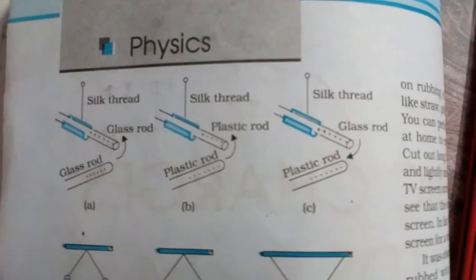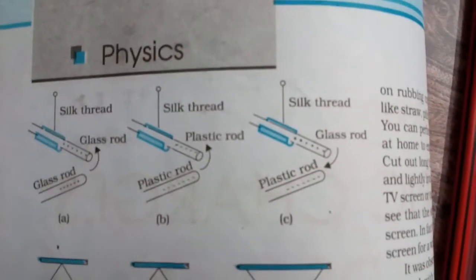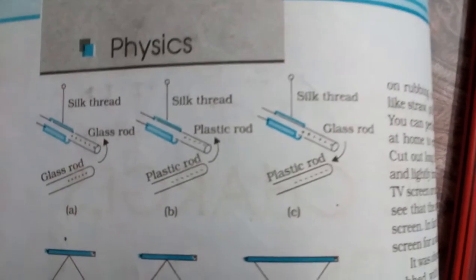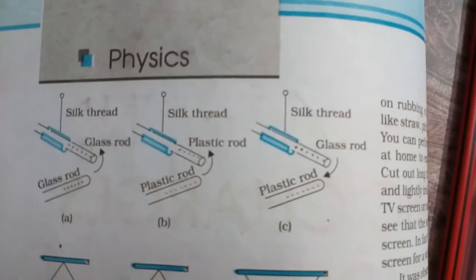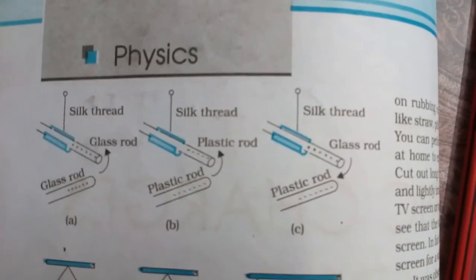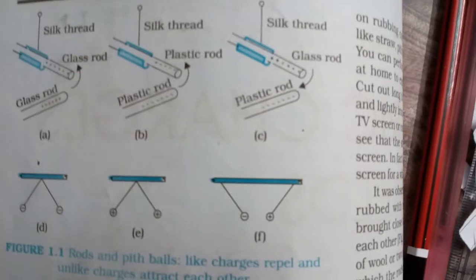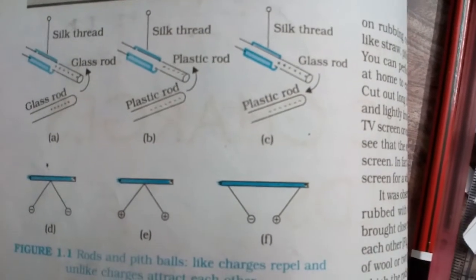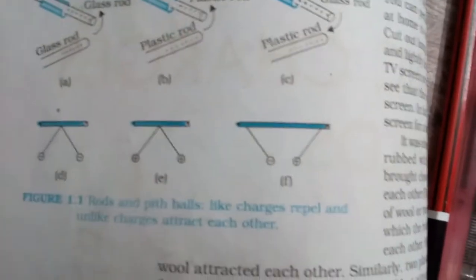Now take a glass rod, rub it with silk, and suspend it with the help of a silk thread. Take another glass rod, rub it with silk, and bring it close to the suspended glass rod. You will see there is repulsion. As you may see in this diagram or photo, two glass rods are repelling each other.